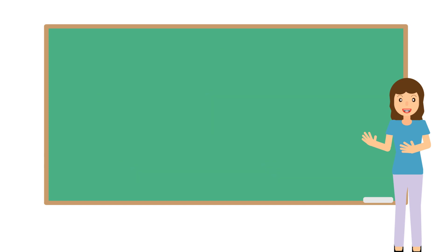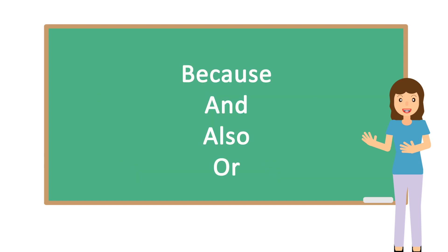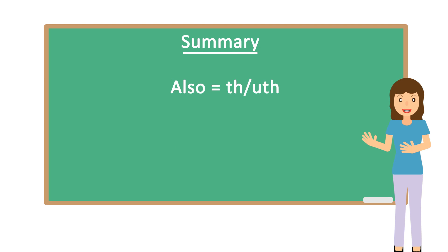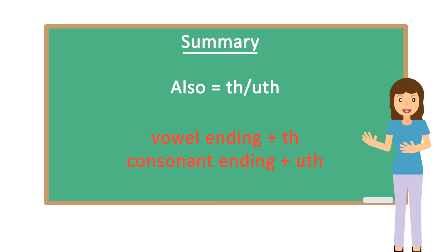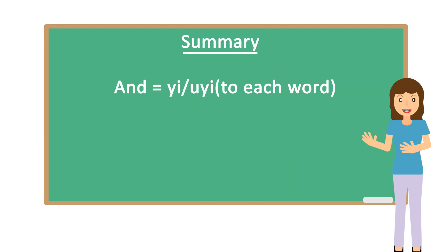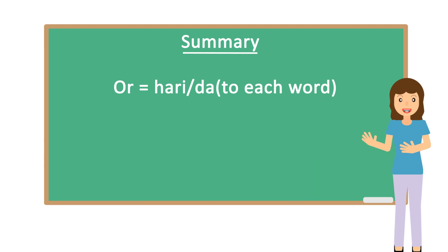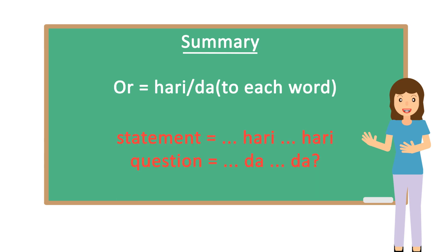Now you know how to say 'because,' 'and,' 'or,' and 'also' in Sinhala. Here is the summary of this lesson: The word for 'because' is NISA, but you have to add it at the end of a sentence. To say 'also' or 'too': if the word ends with a vowel sound, add UTH at the end; if the word ends with a consonant, add UTH at the end. To say 'and': add I or UI at the end of each word — add UI if it ends with a consonant, add I if it ends with a vowel sound. To say 'or': if it's a statement, add HARI after each noun; if it's a question, add DHA after each word.